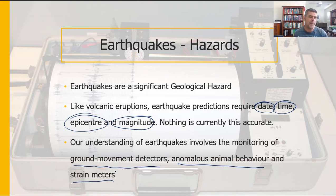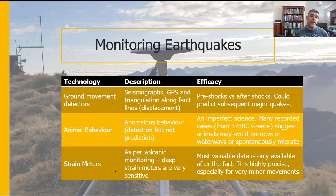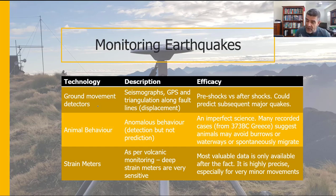In addition, we've seen some interesting effects of animal behaviour associated with earthquakes, which we'll look at in more detail. When monitoring earthquakes, there are three areas to examine — and I've given you the same table we used for volcanic eruptions. We've got ground movement detectors, animal behaviour, and strain meters, which are the three things specifically mentioned in your syllabus, so you need to be aware of them.